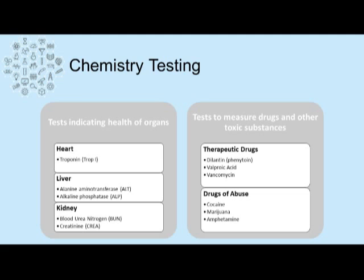There are organ-specific tests in the clinical chemistry lab to give you an idea of the health of specific organ tissues. These include but aren't limited to troponin, which gives the healthcare provider an idea of the patient's heart health. Liver-specific tests include alanine aminotransferase, alkaline phosphatase, and many others. There are also kidney-specific tests, such as blood urea nitrogen and creatinine.